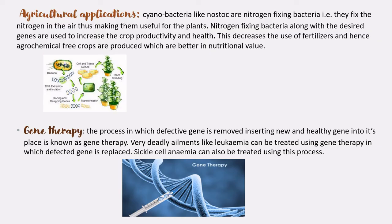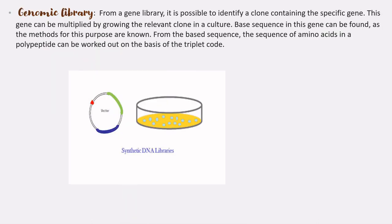In agriculture, desired genes are used to increase crop productivity, health, and nutritional value. Gene therapy involves the replacement of a defective gene by inserting a healthy gene. Diseases like leukemia and sickle cell anemia can be treated using this approach.